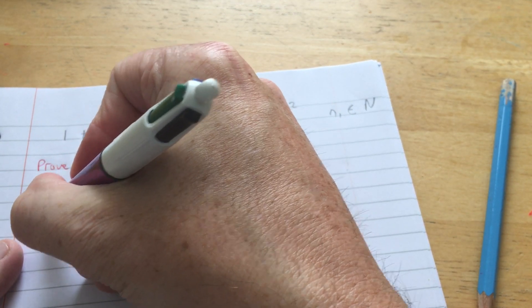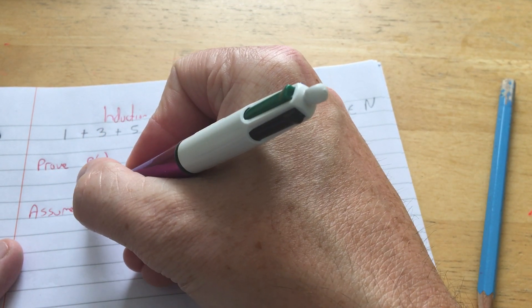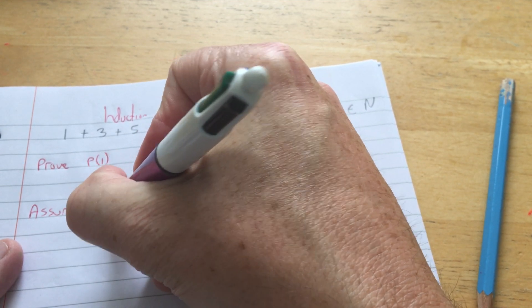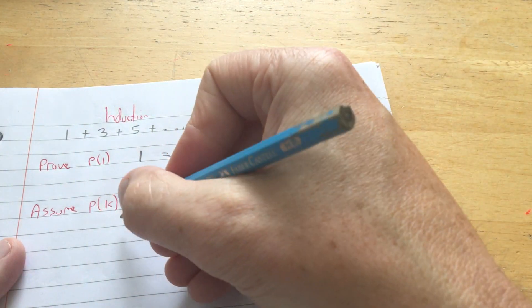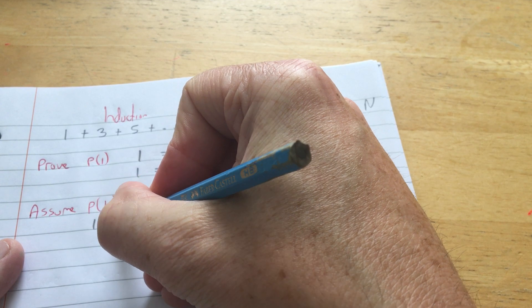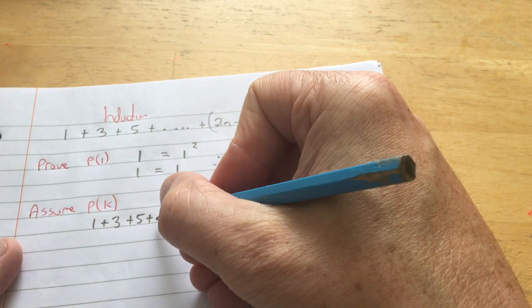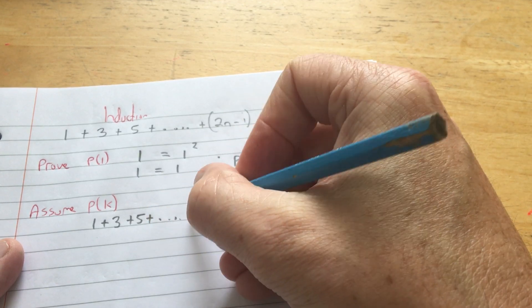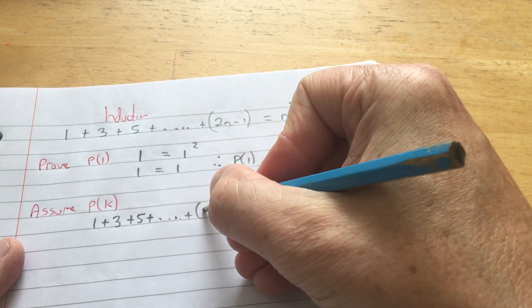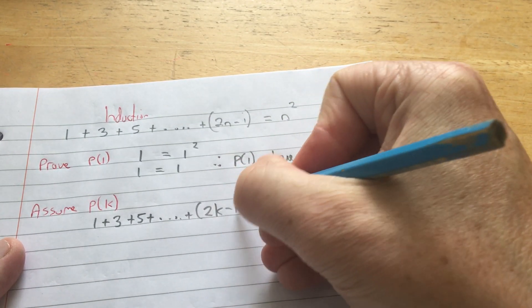Now, we assume P(k), and the assumption is going to be really important because we'll always use our assumption in induction. So we assume that the proposition is true up to k. Now, k is just some number. It could be 10, it could be 100, it could be 1,000. It's just a value. So plus 2k minus 1.